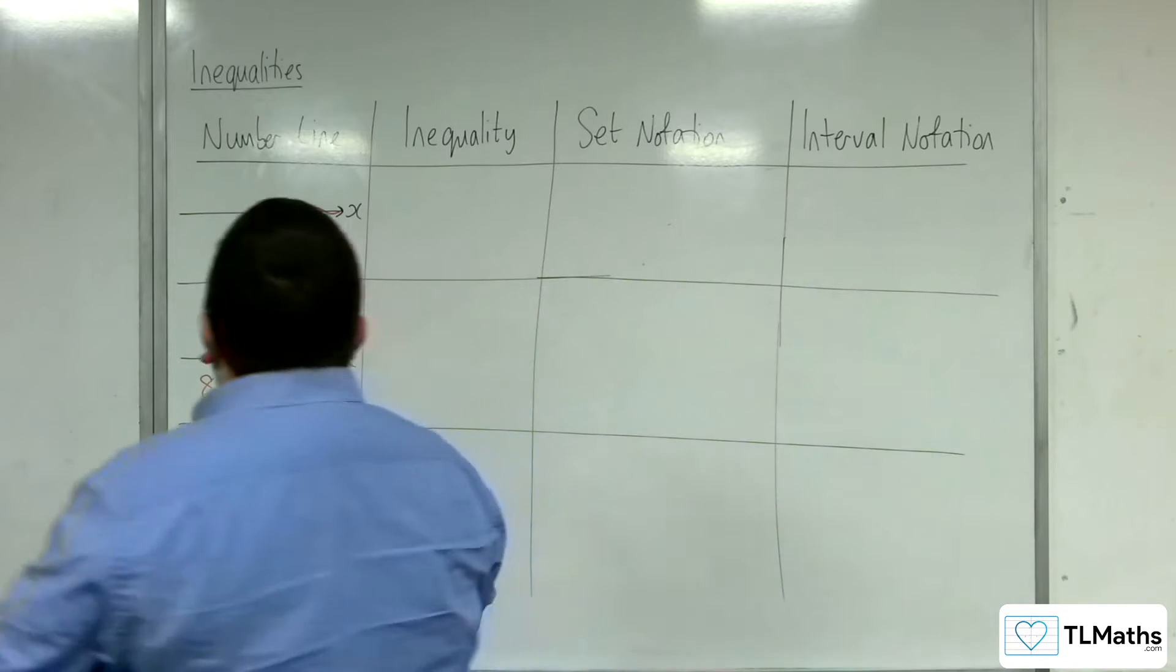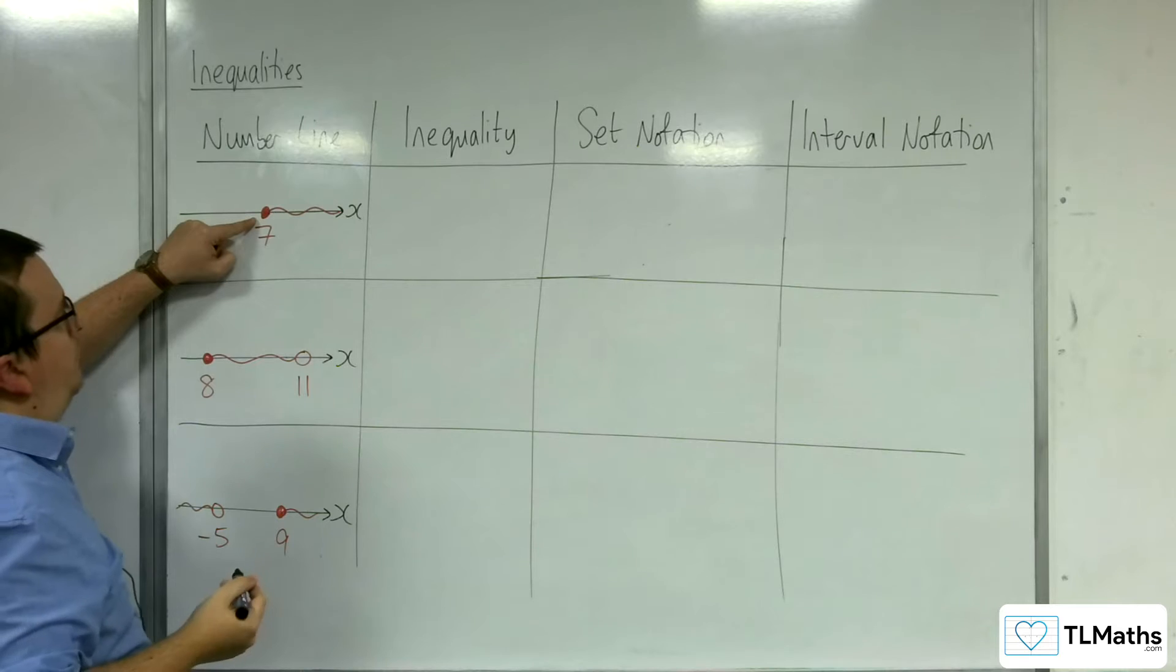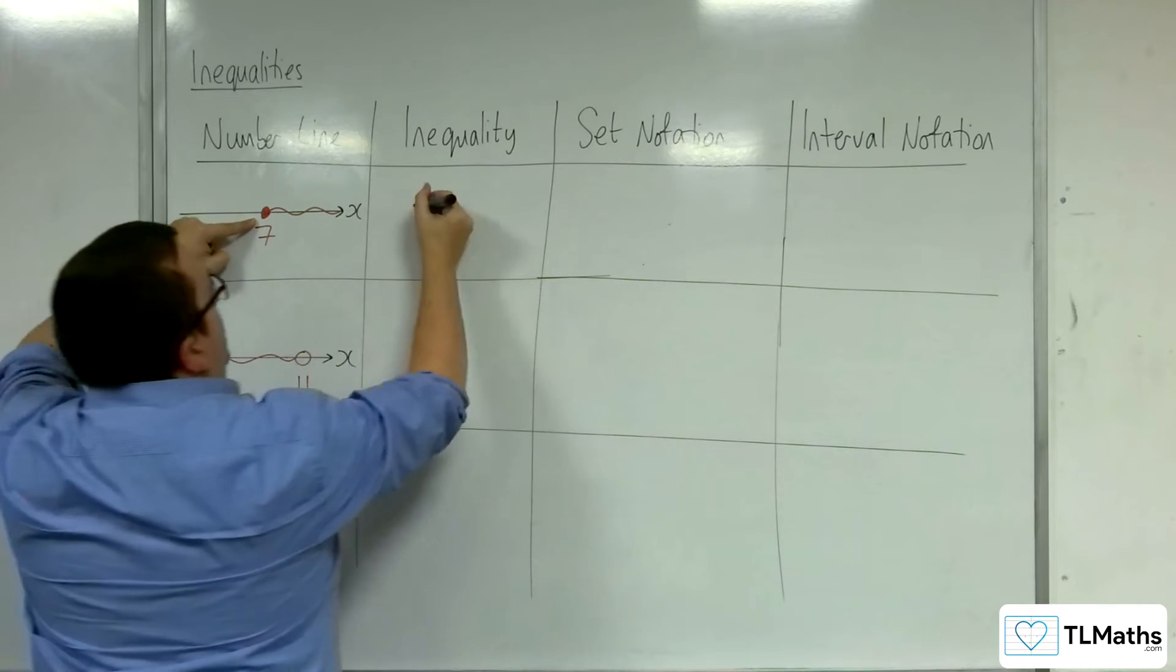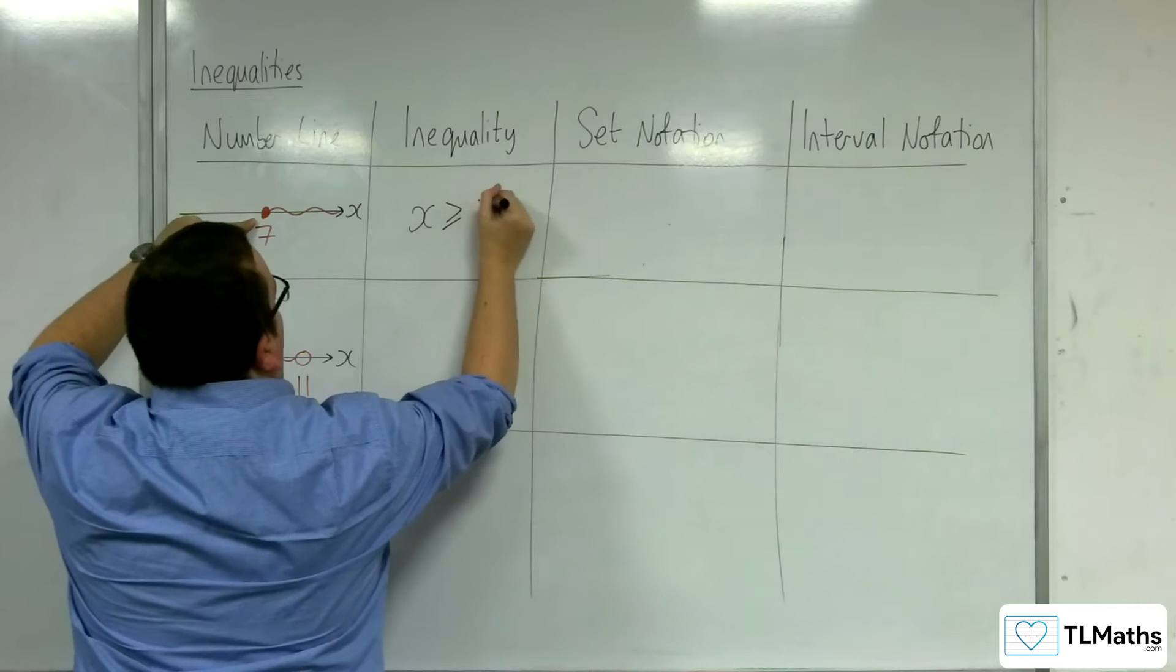So this first one, solid dot represents including. We're going above that, so this would be x is greater than or equal to 7.